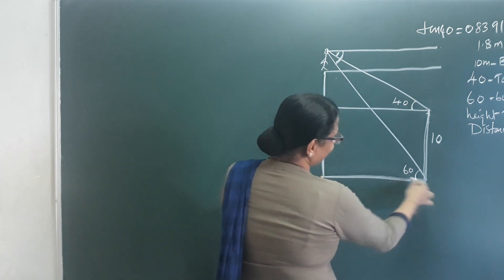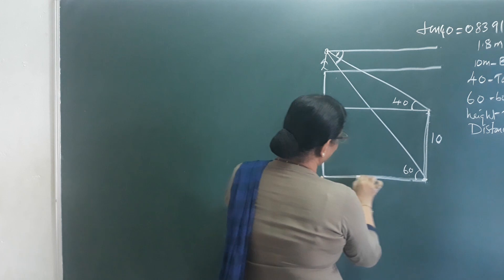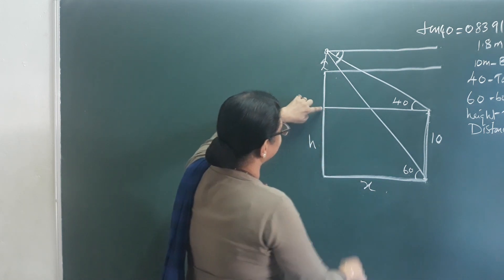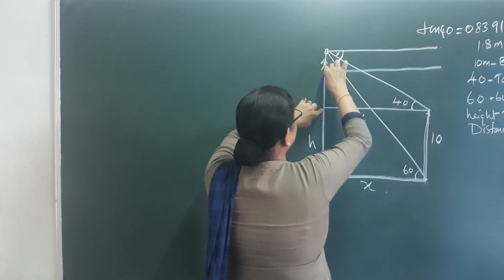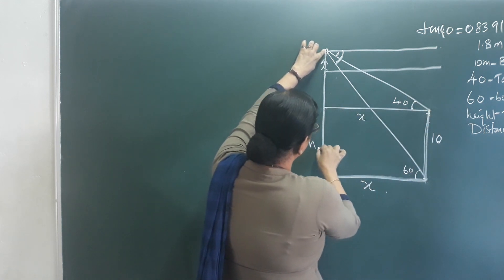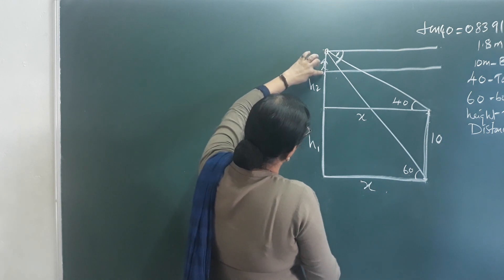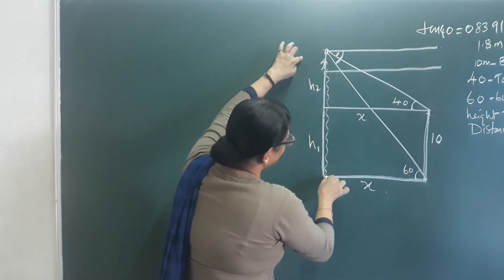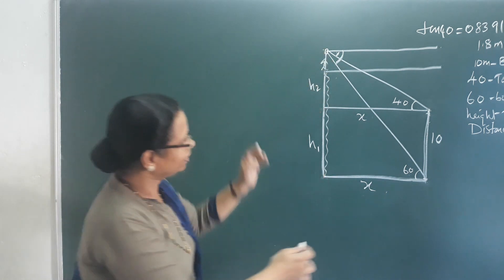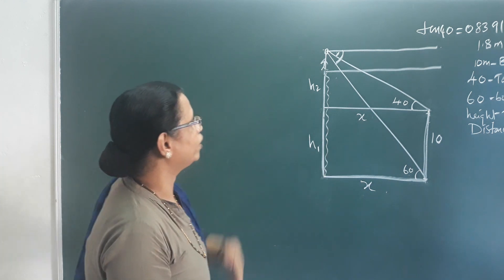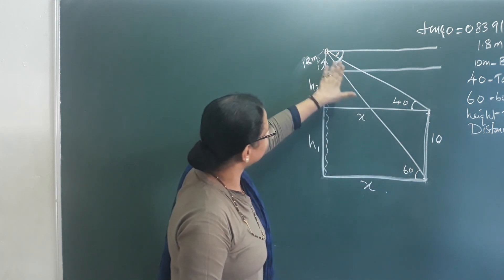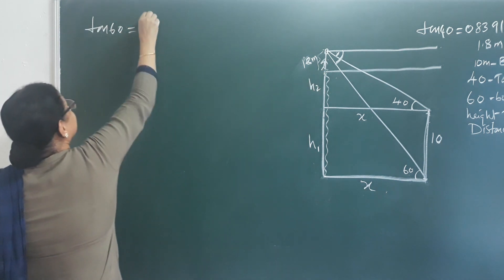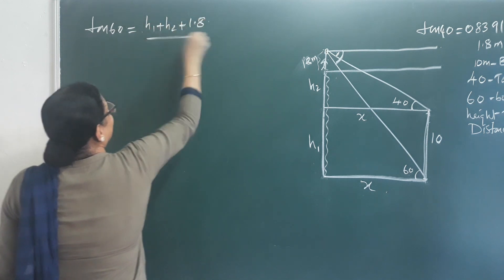Here is the telephone tower. This is X as the horizontal distance. The height is divided into h1 (building height) and h2 (additional tower height). The total tower height is h1 plus h2. Consider the first triangle: tan 60 equals h1 plus h2 plus 1.8 divided by X.